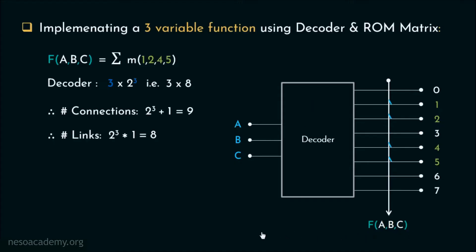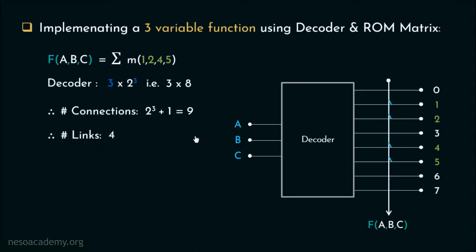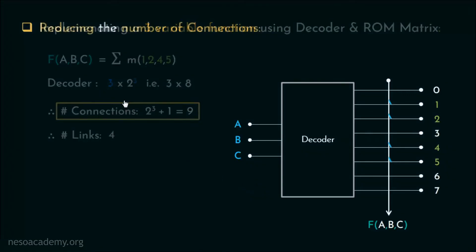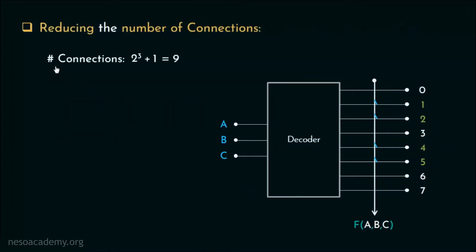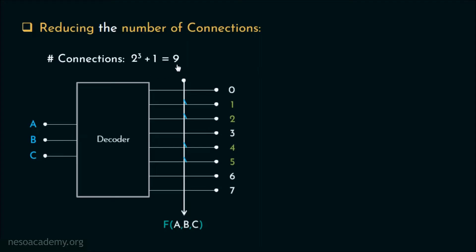As we burn the rest of the links, the number of links remaining is 4 for those four intersections. Now, we can't really do much about the number of links. However, if we try, we can reduce the number of connections. Allow me to illustrate this — at this particular instance, the number of connections for this ROM matrix is 9.